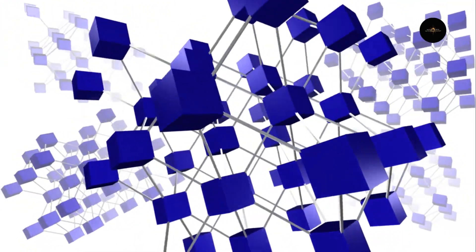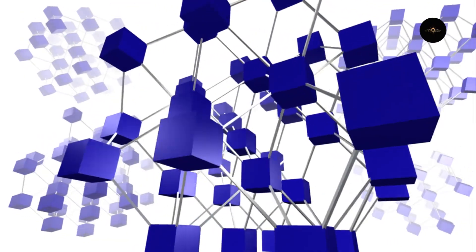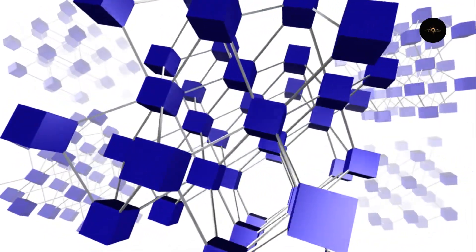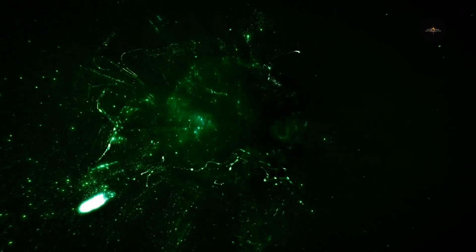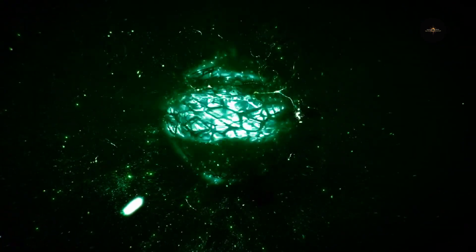The spins communicate with each other in a non-local way, exchanging information without a preferred direction. It's as if there is a hidden order that we cannot observe directly, but which manifests through the tools of quantum language. In other words, what appears to be chaos is actually a profound order that escapes our senses.